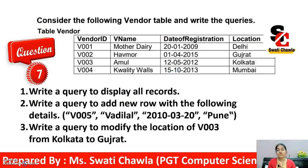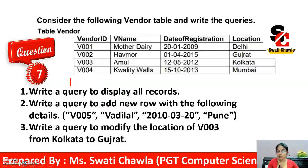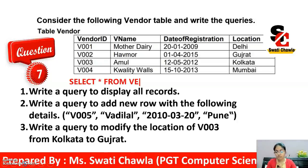Now see this next question: consider the following vendor table and write the queries. The table name is 'vendor' with columns vendor_id, name, date_of_registration, and location. The first query: write a query to display all the records. To display all records, write: SELECT * FROM vendor.